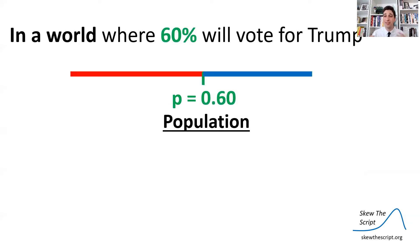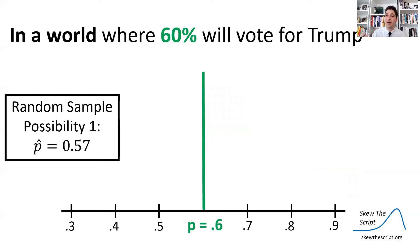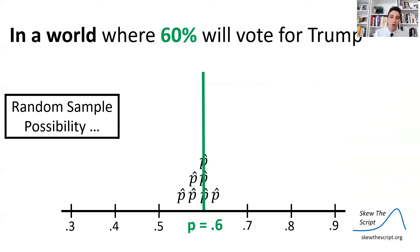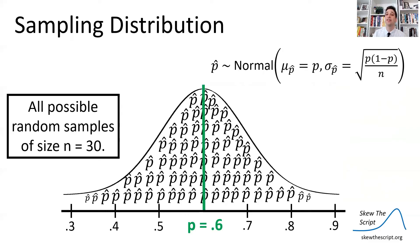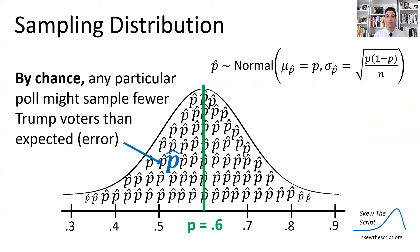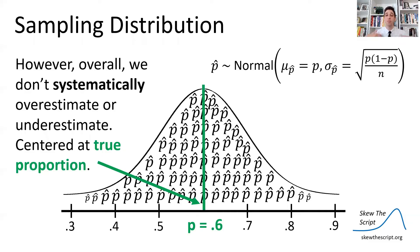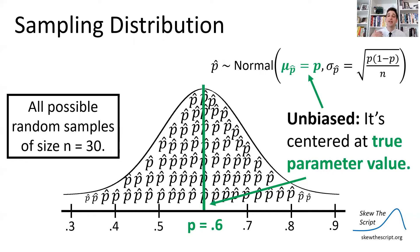In a world where 60% of voters will vote for Trump, you can imagine different possible random samples happening from 30 poll respondents at a time. The first time we underestimated, the second time we overestimated, the third time we estimated right on. By chance alone, some overestimate and some underestimate the true proportion. We can make a distribution of these possible sample proportions. By chance alone, any particular poll might get fewer Trump voters than expected — that's called sampling error. But overall, these polls should center at the true proportion of 60% voting for Trump.